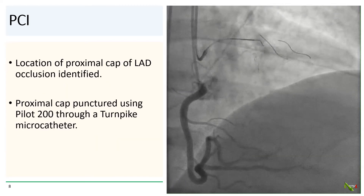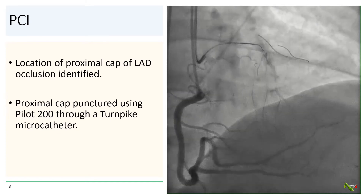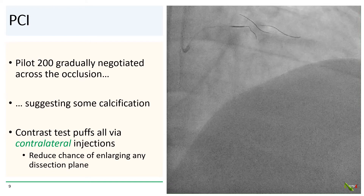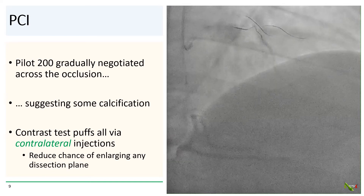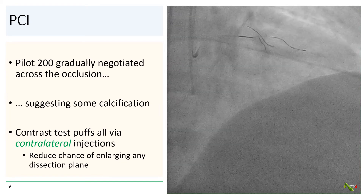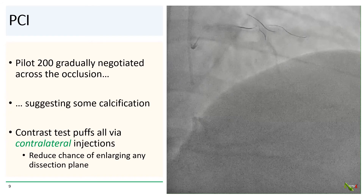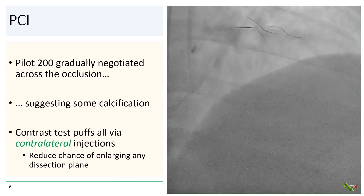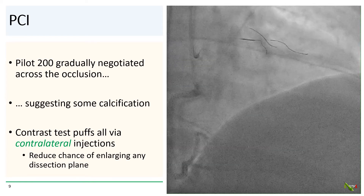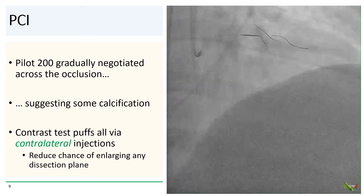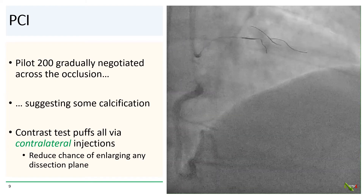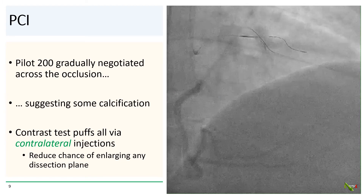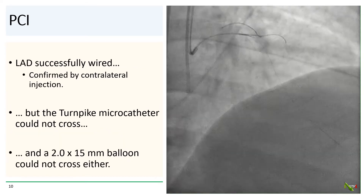With contralateral injections, we identified the location of the proximal cap of the LAD occlusion, and punctured it with a pilot 200 wire via a turnpike microcatheter. Quite often, at least in more subacute occlusions, after the proximal cap is punctured, the wire quickly sails across the occlusion and enters the distal vessel. But unfortunately, this was not true in our case. We had some difficulty negotiating the pilot 200 wire across the occlusion, suggesting that the lesion is at least somewhat calcified and is probably more chronic than subacute. Note that until we were sure that we crossed the lesion, all contrast test puffs at this point are done with contralateral injections. That's because if we happen to be in a subintimal location in a dissection, antegrade injections at this point could enlarge the dissection plane and make it more difficult to get back into the true lumen.